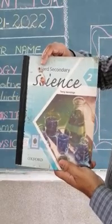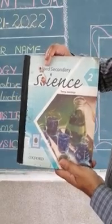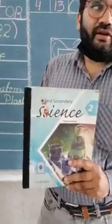Now look at the book. All students must have this book — this is your science book which we will study in midterm session. The name of the book is Oxford Secondary Sciences, written by Terry Jennings. All students must have this book.